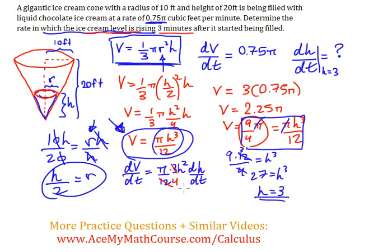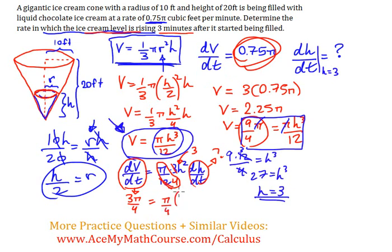So, now, what do we have again? We have dv dt. We have h. And this is what we want to know. Our h is 3. dv dt is 0.75 pi or 3 pi over 4, right? That's 0.75. Just replacing it right there. So, that's equal to 3. I'm getting kind of lost with my own mess here. So, I got pi over 4, 3 squared, dh dt. And, of course, all we want to do now is solve dh dt.